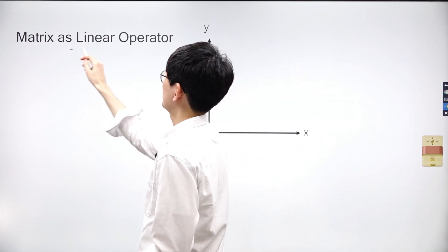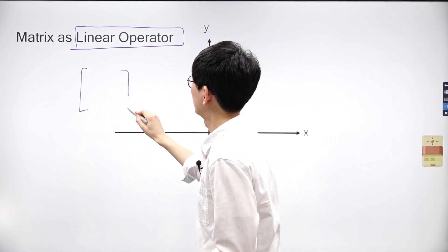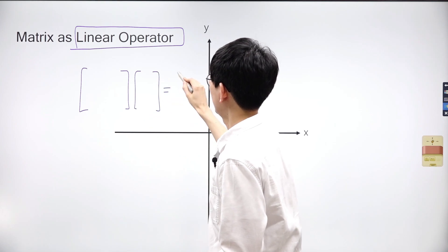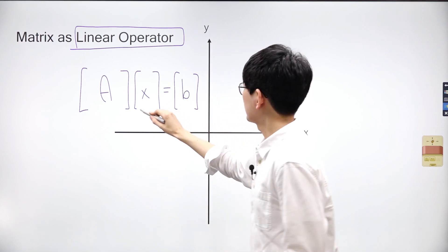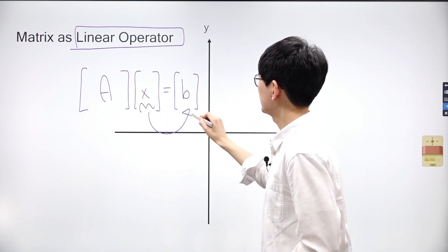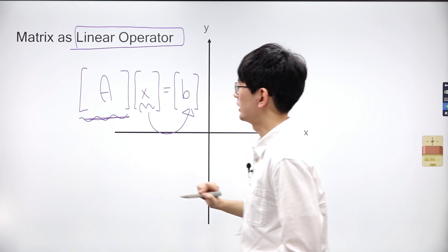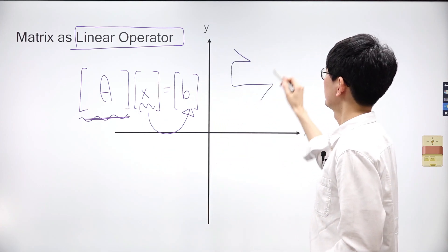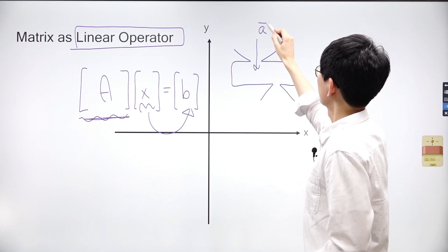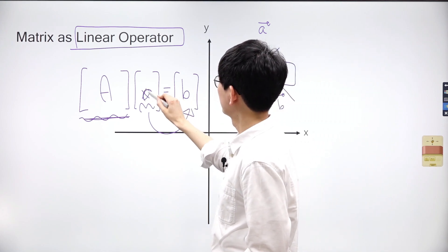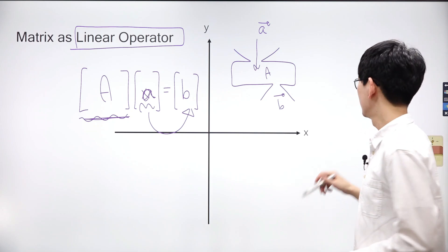We can view a matrix as a linear operator. In a matrix-vector multiplication of the form Ax equals b, where A is a matrix and x and b are vectors, matrix A acts as a linear operator that transforms vector x into vector b. Imagine there is an unknown box that takes vector x as an input and produces vector b as an output — inside this box, matrix A is multiplied by vector x. Thus, the matrix itself functions as a linear operator.